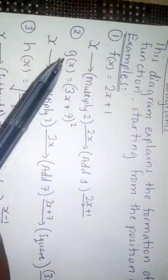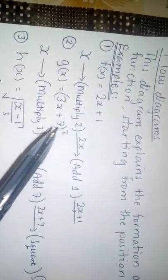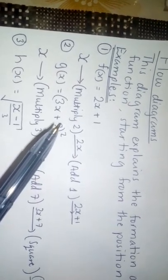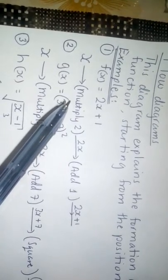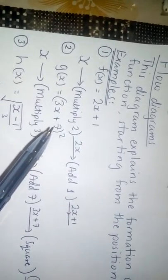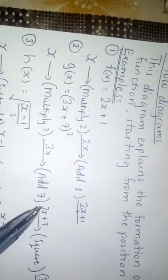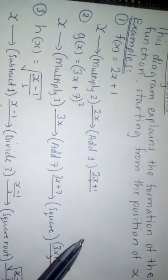Starting from x, next is multiplying by 2 — we get 2x as shown here. Then we add 1 and we get 2x + 1. This flow indicated here is what we call a flow diagram. Let's look at another example: g(x) = (3x + 7)². Starting from x, you will see that x has been multiplied by 3, after which it has been added by 7, then everything is squared. On the flow: x, multiply by 3 to get 3x, add 7 to get 3x + 7, then square everything.